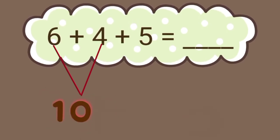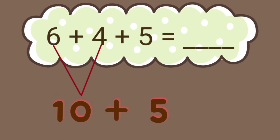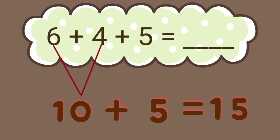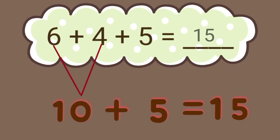10 plus 5 equals 15. So 6 plus 4 plus 5 equals 15.